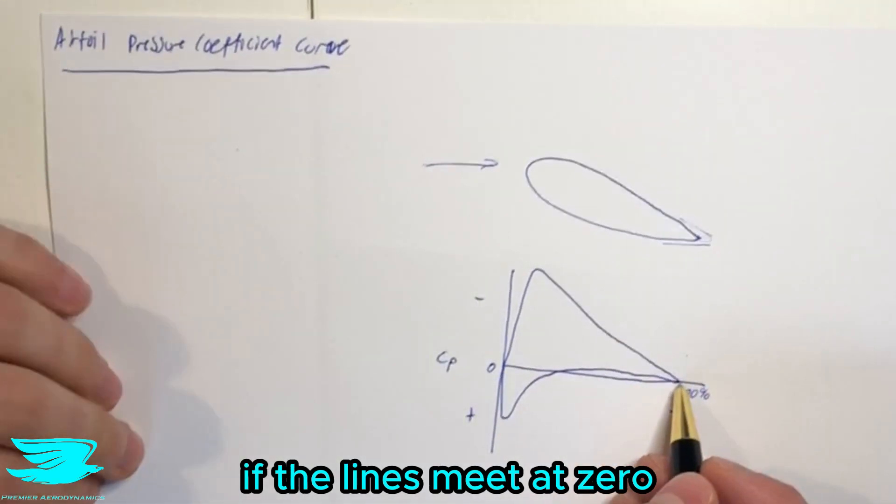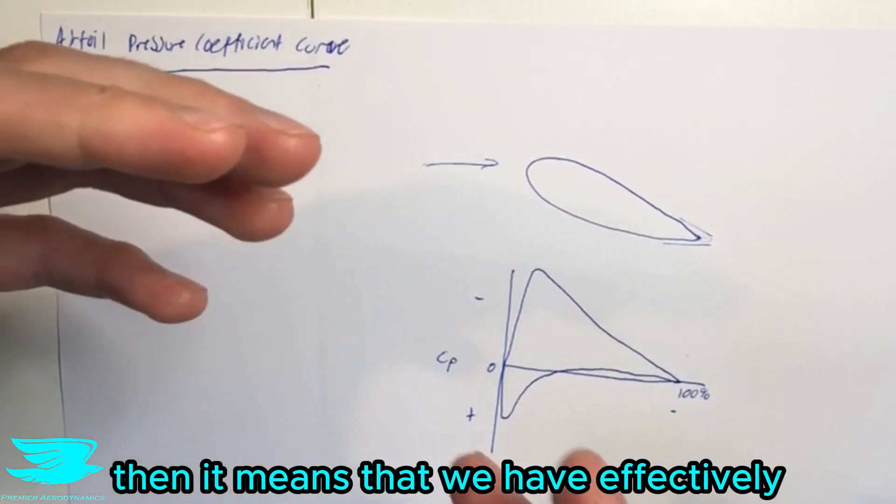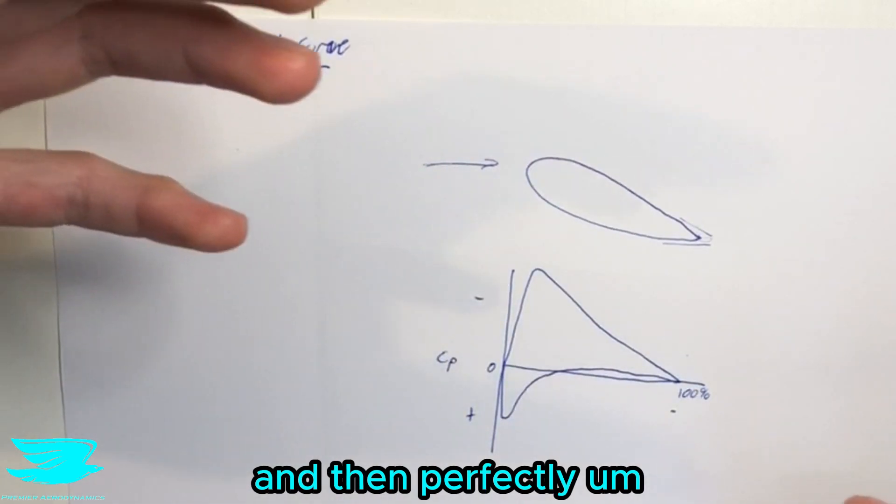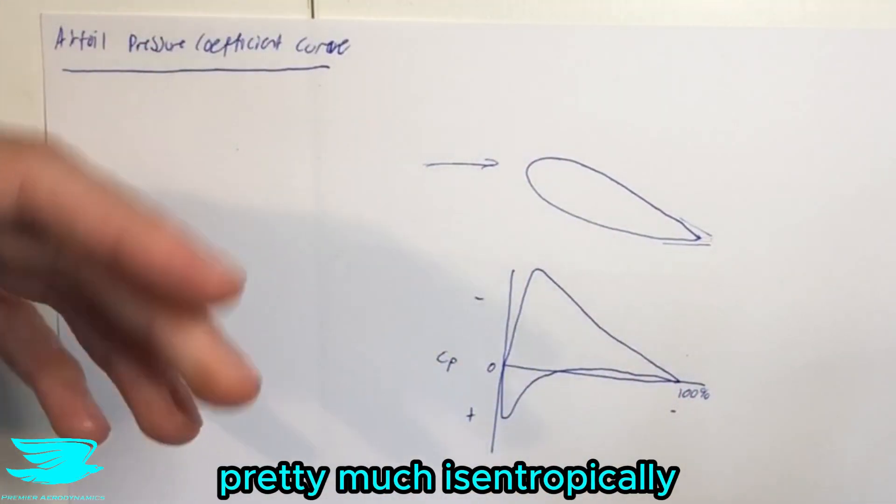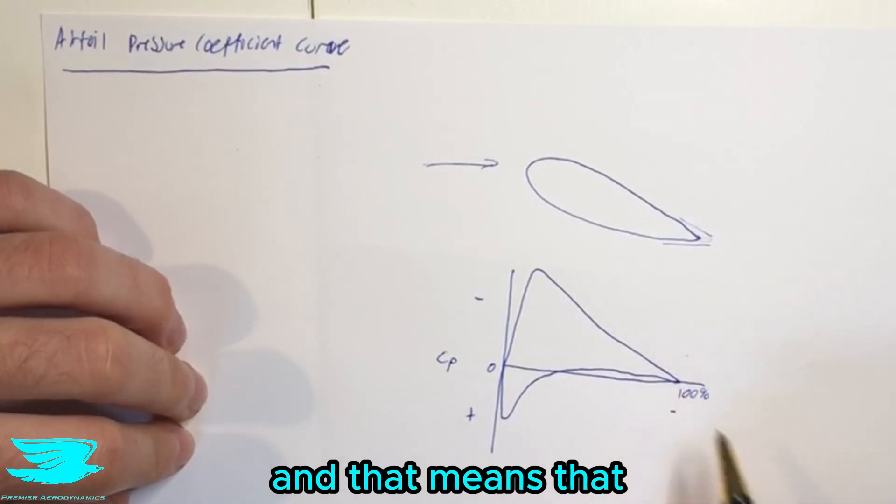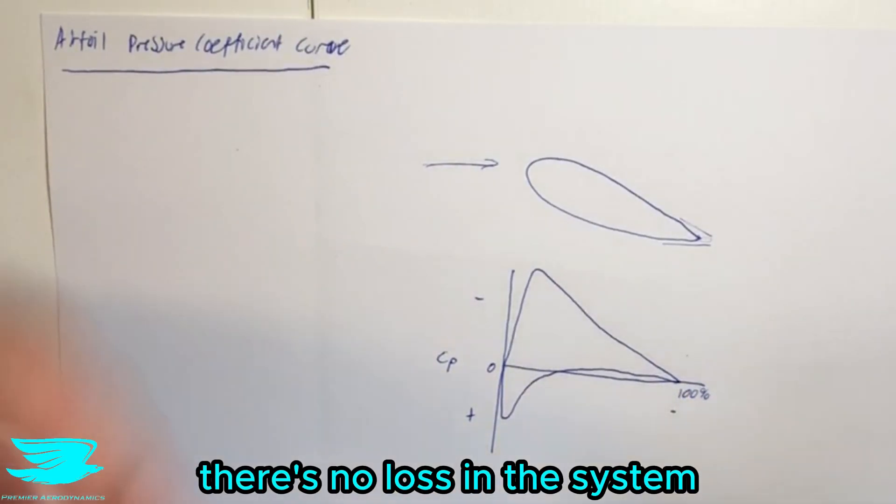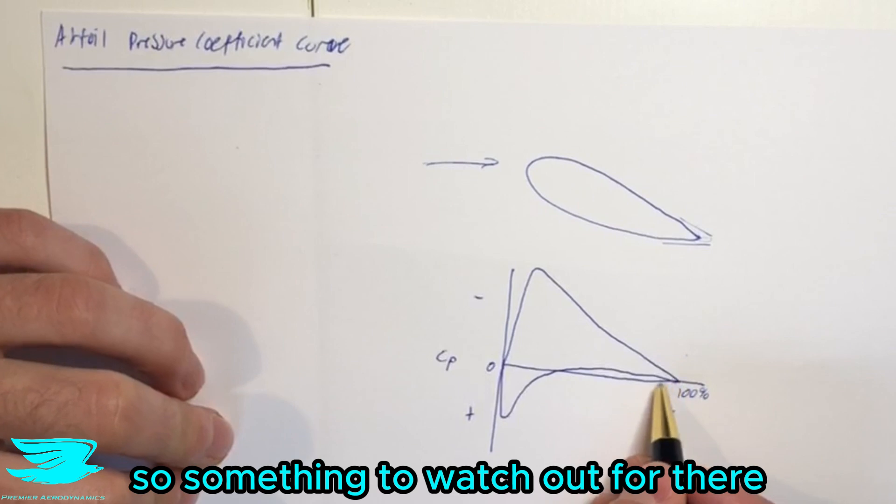If the lines meet at zero, then it means that we have effectively perfectly expanded the flow and then perfectly compressed the flow. So we've changed the pressure pretty much isentropically. And that means that we have a very, there's no loss in the system. So that's something to watch out for there.